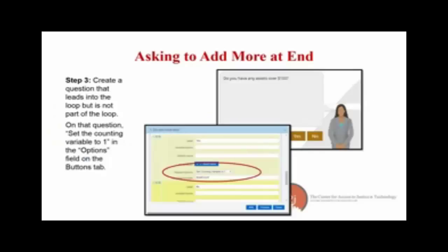Step three for this method: create a question that leads into the loop but is not part of it. This is the equivalent of the 'how many' question, but it asks whether the user even wants to enter the loop at all — 'do you have any assets over $100?' If they say yes, on that yes button, set the repeat options to 'set counting variable to one' and designate the counting variable as 'asset count.' If they select no, it's just normal branching, taking them past the loop to the next set of questions.